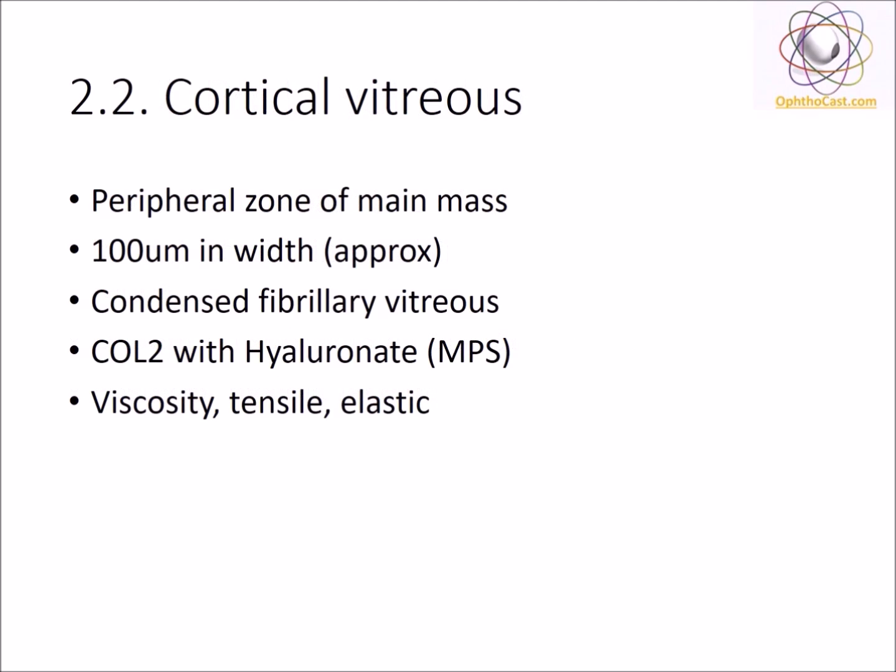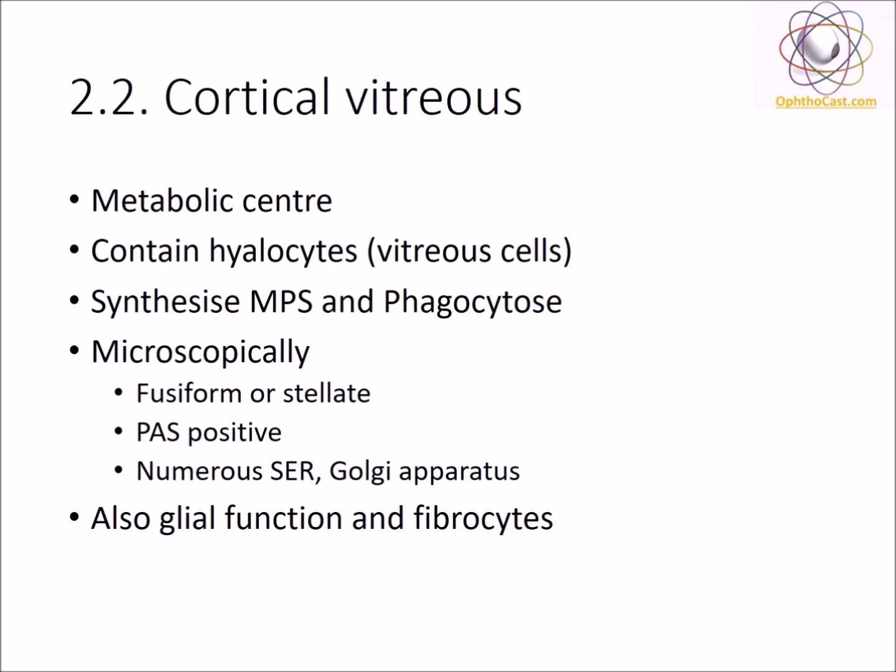Cortical vitreous is a peripheral zone of the main mass with a width of approximately 100 microns. This zone contains condensed fibrillary vitreous, the main contents being type 2 collagen with hyaluronate, a mucopolysaccharide. This zone also has high viscosity, tensile strength, and elasticity. Cortical vitreous is the metabolic centre containing hyalocytes, the vitreous cells which synthesize mucopolysaccharides and have phagocytotic action. Microscopically, they are fusiform or stellate with periodic acid Schiff-positive granules, containing numerous smooth endoplasmic reticulum and Golgi apparatus. These cells also serve glial and fibrocyte functions.